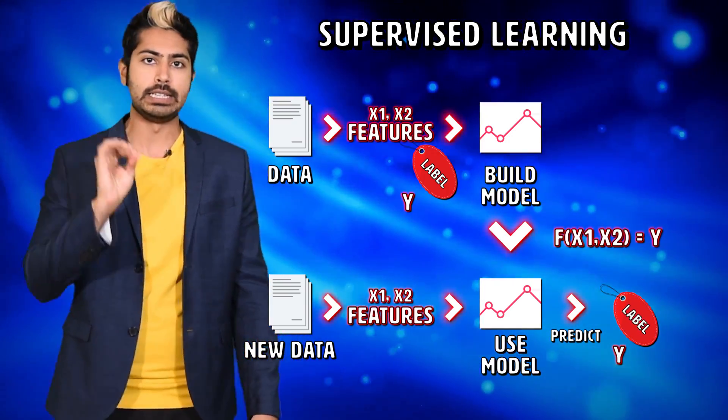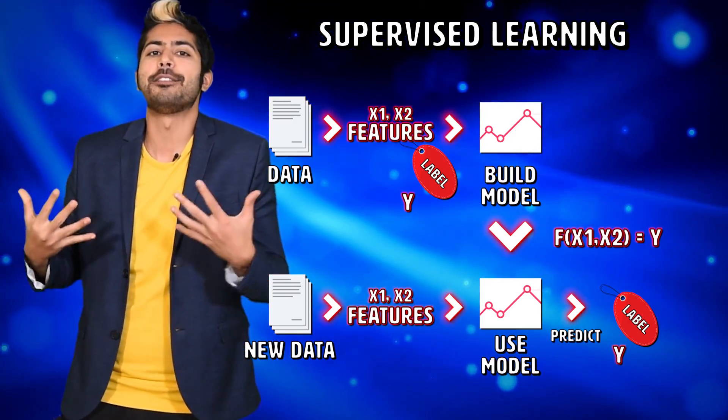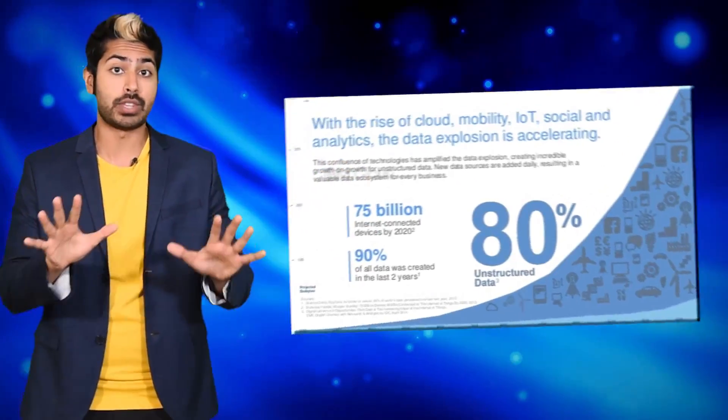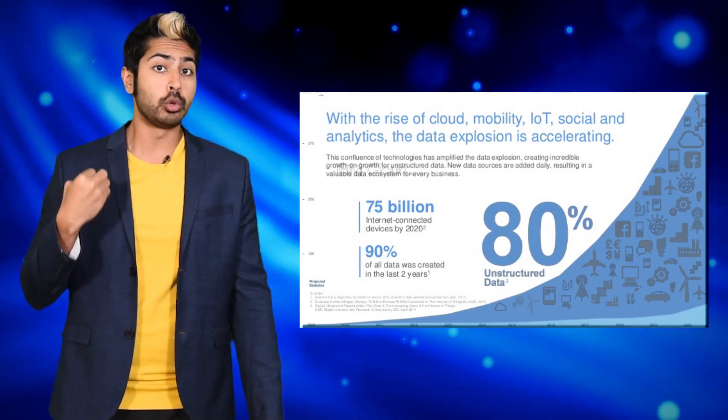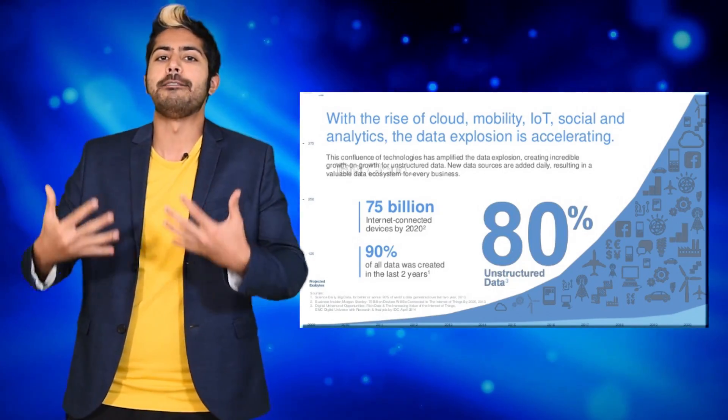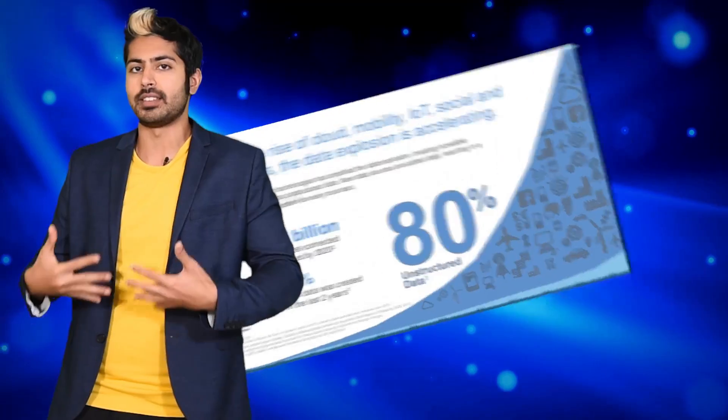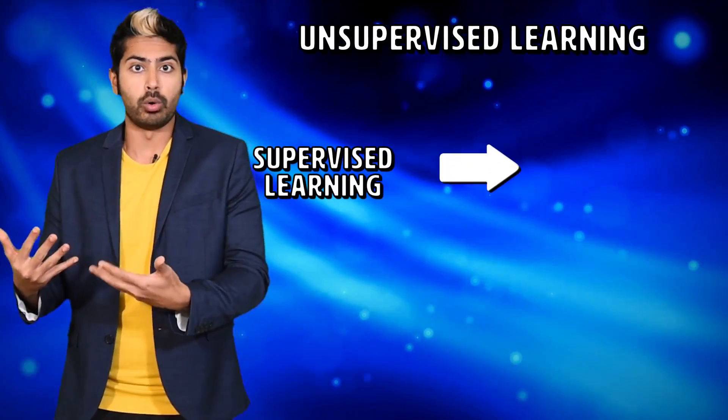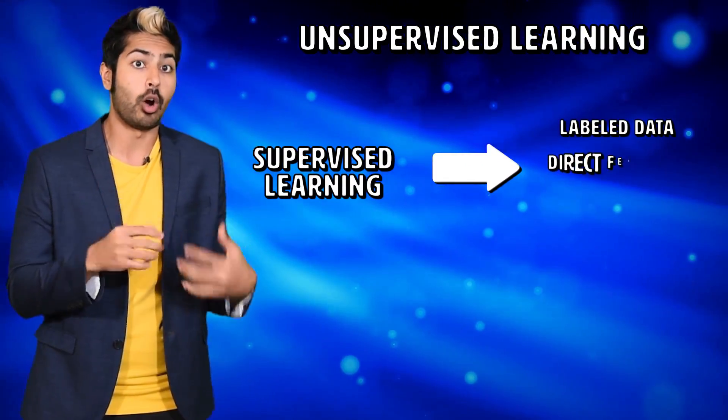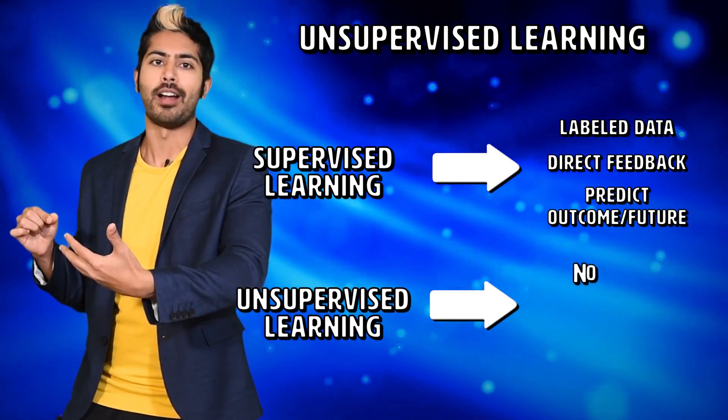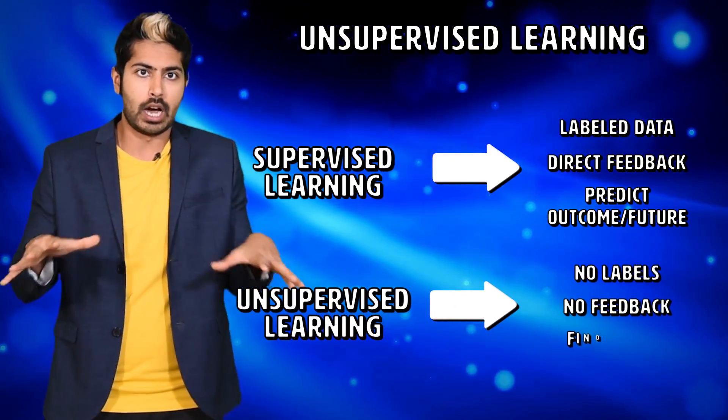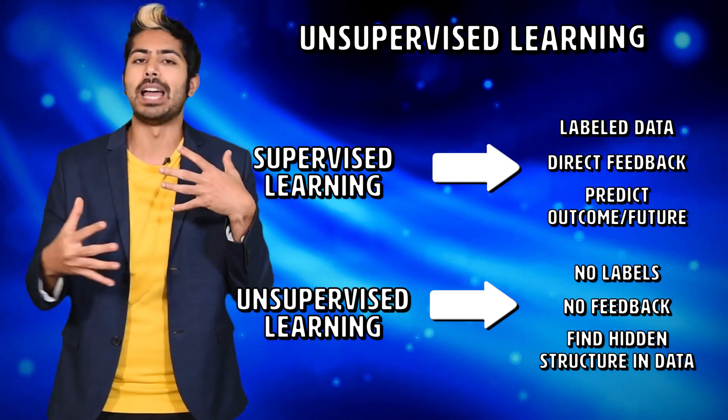But clean, perfectly labeled datasets aren't always easy to find. In fact, 80% of the world's data is unstructured. The goal of unsupervised learning is to automatically find structure in a dataset. This can itself be the goal, discovering hidden patterns in data, or a means to an end to learn what the most relevant features are. We can further subdivide unsupervised learning into different types of techniques.